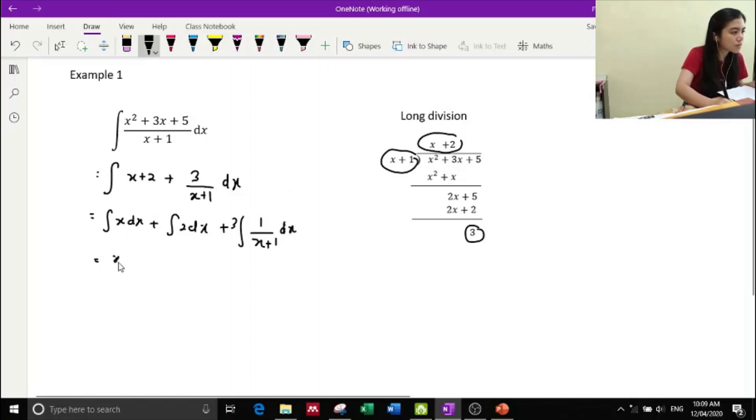So for the first integration, we have the answer of x squared over two, the second integration, we have two x, and then we have three ln x plus one plus C as the answer for this example.